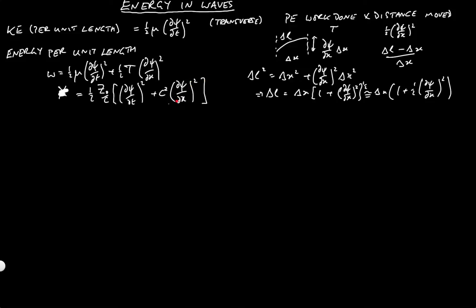And dimensionally, this whole thing makes sense because z0 over c is a mass-like term, a mass per unit length term. dpsi by dt is a velocity, so you get a velocity squared. And dpsi by dx is dimensionless, so c squared times that is also a velocity.